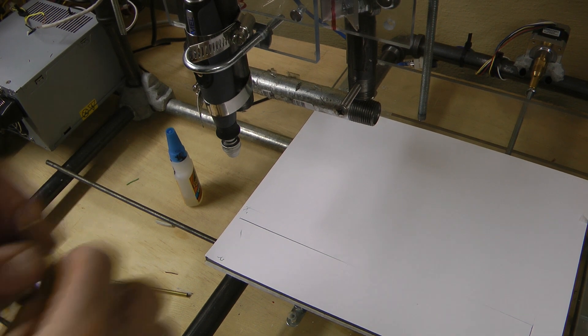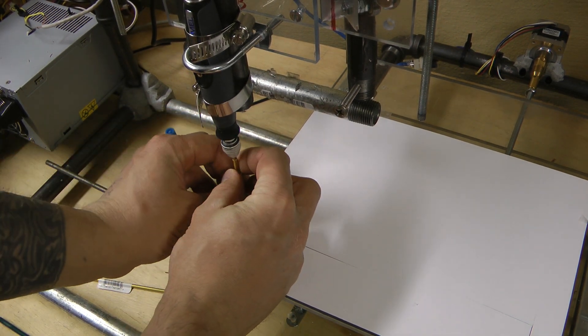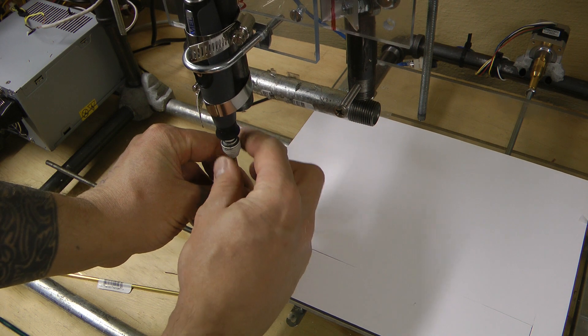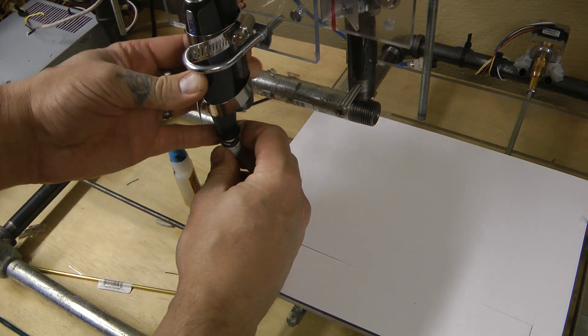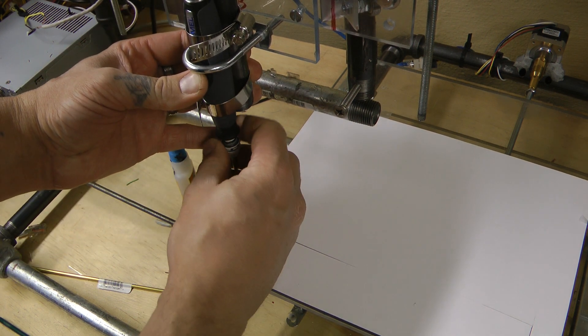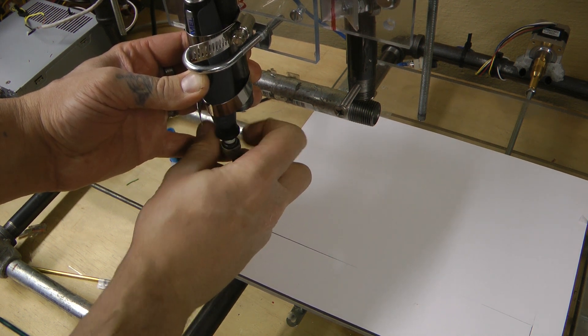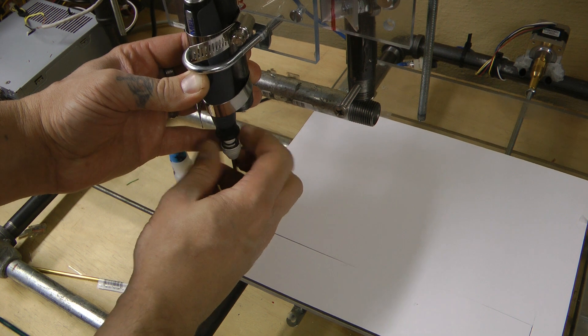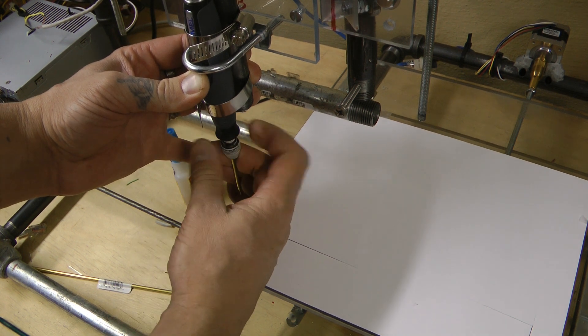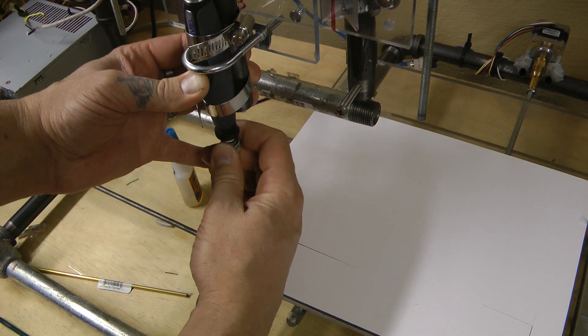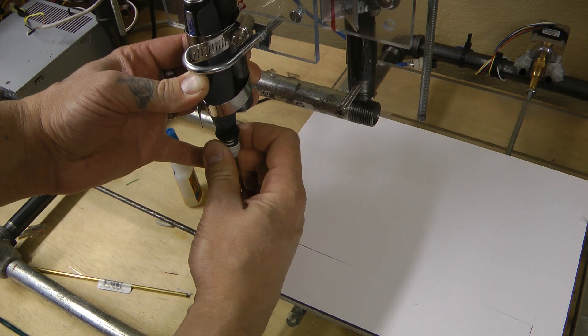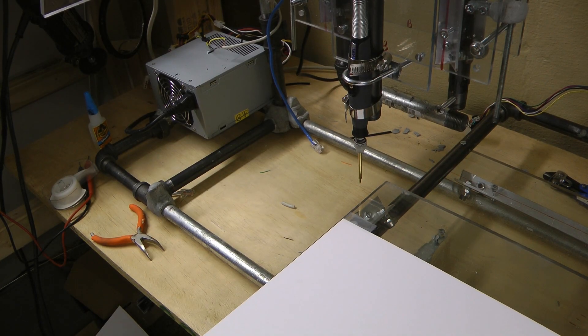With the glue now dry, we can just go in here and put this in this collet. Press the button and tighten it all up. Oops, I think I went the other right way.